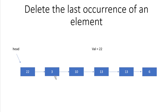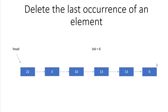The third case is when the value to be deleted is the last node. For example, if the value is 6, which is the last node, we iterate from the head and change the linking so that the previous node's next becomes null — for example, 13.next equals null.